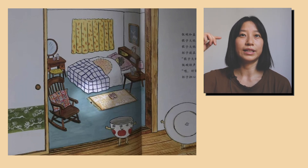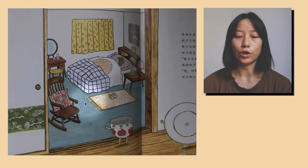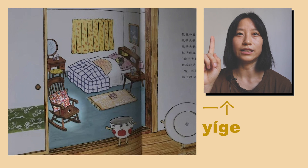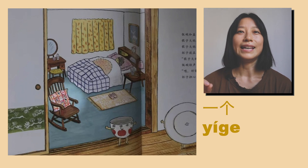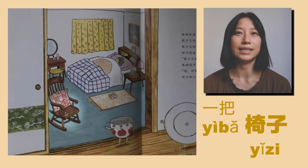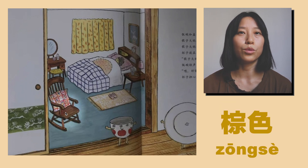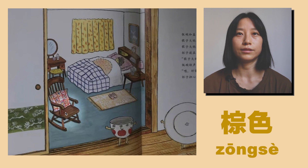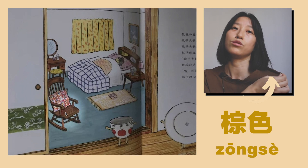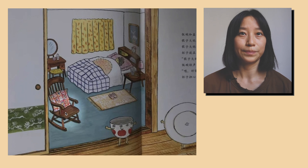我在臥室裡面。裡面有一個椅子。一把椅子。棕色的。 (I am inside the bedroom. Inside there is a chair. One chair. Brown.)